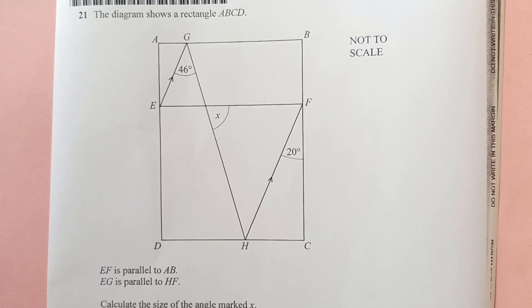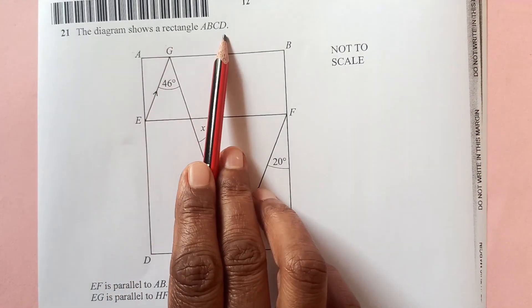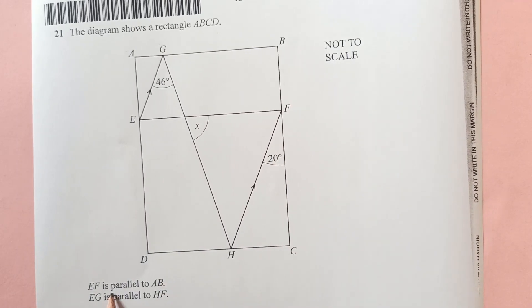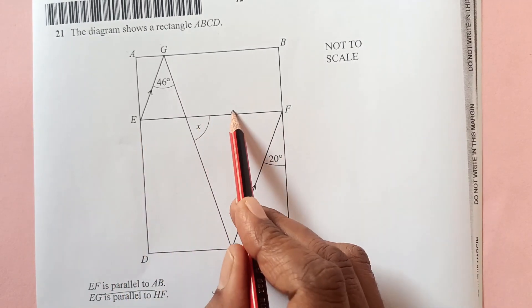There was one question here and the diagram shows a rectangle ABCD. You see this rectangle ABCD here. EF is parallel to AB. EF, where is EF? EF is here.